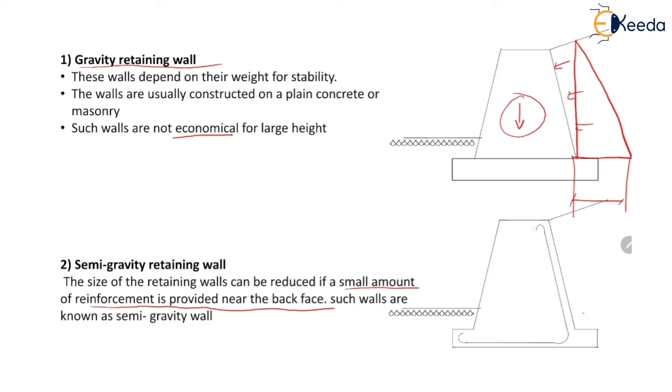Here in this figure we can see that a small amount of reinforcement is provided at the back face as well as at the base. So the size of this retaining wall can be reduced. Such walls are known as semi-gravity retaining walls.